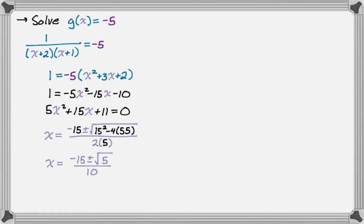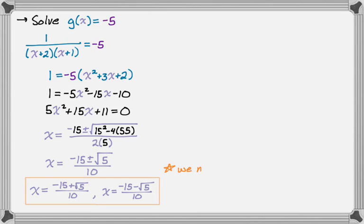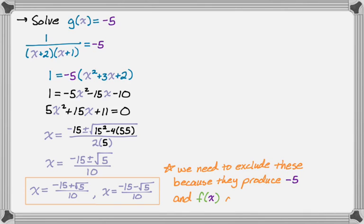We have this, okay. And so I like to break this apart into two things, so I'm going to say x is negative 15 plus radical 5 over 10, or x is negative 15 minus radical 5 over 10. So these are the values that make g(x) equal negative 5, and since they make g(x) equal negative 5, we need to exclude those values specifically because they produce a negative 5. And f(x) just simply cannot use that. So we're going to add these as restrictions to our domain as well.